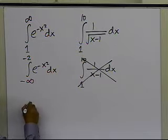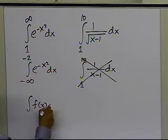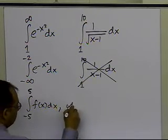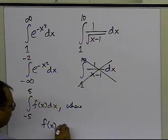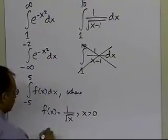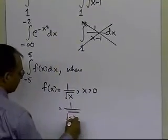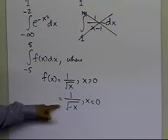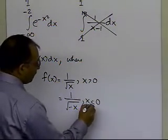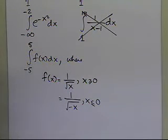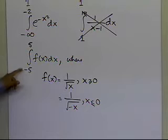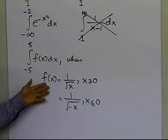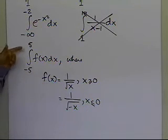Now, you can also have integrals like this, so you can have f of x dx going from minus 5 to plus 5, where f of x is equal to 1 divided by square root of x, for x greater than 0, and is equal to 1 divided by square root of minus x, for x less than or equal to 0. So you could have integrals where the integrand becomes infinite, not necessarily at the end points, but somewhere at some point between the lower limit and the upper limit of integration.